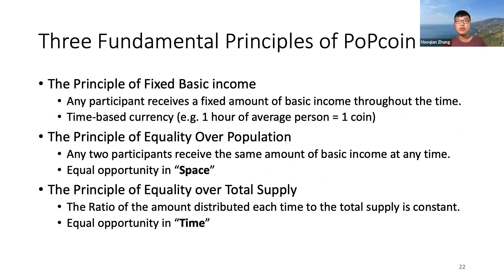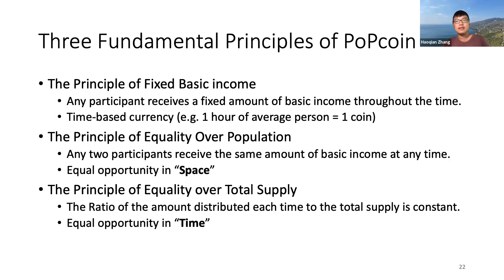The PopCoin monetary policy is based on three fundamental principles. The first is the principle of fixed basic income: any participant receives a fixed amount of basic income throughout time. This property makes PopCoin a time-based currency — one PopCoin can symbolically mean one hour of time of an average person, for example.